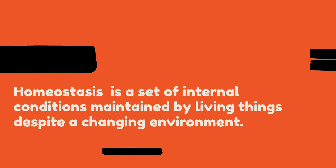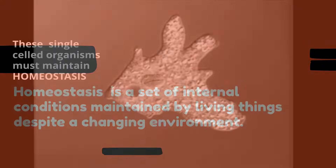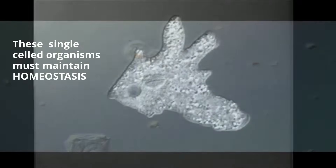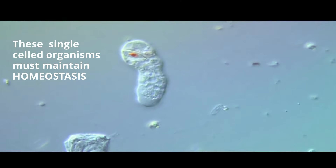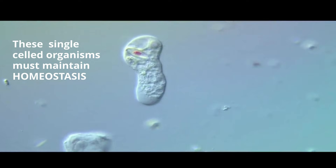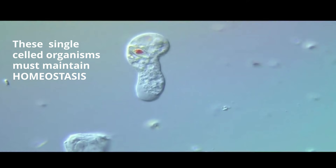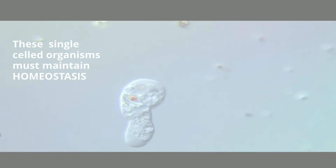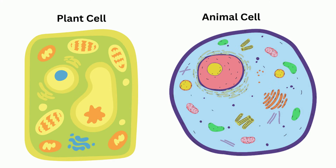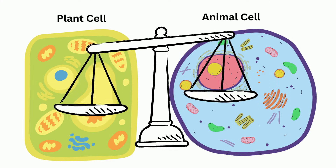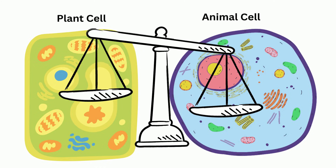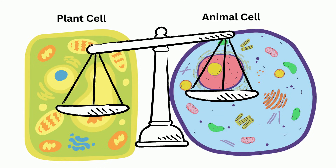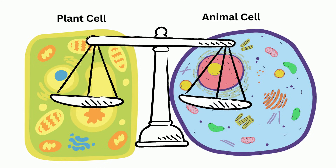Homeostasis allows organisms to function best. All cells must maintain homeostasis to stay alive. Homeostasis is important for cells because it allows them to stay in balance. If cells are out of balance, they will not be able to carry out the chemical reactions they need to survive.